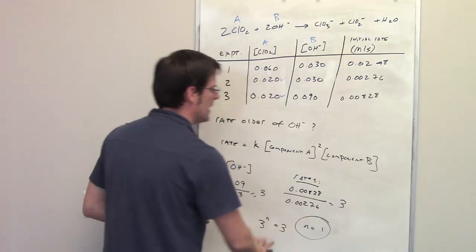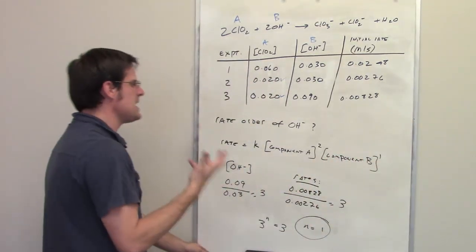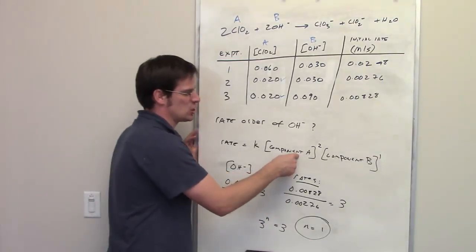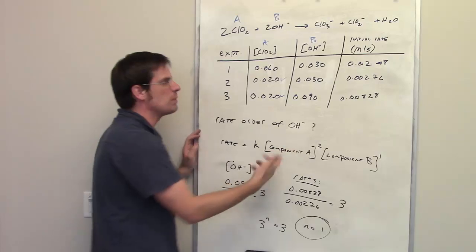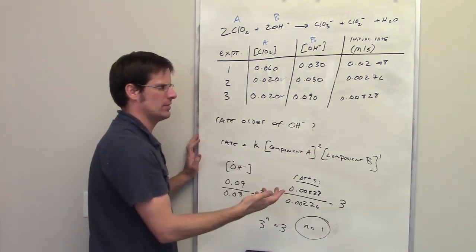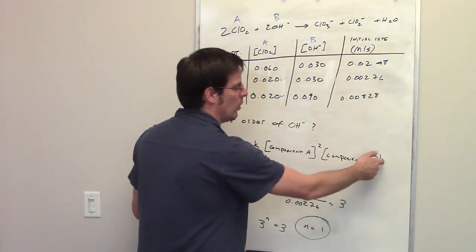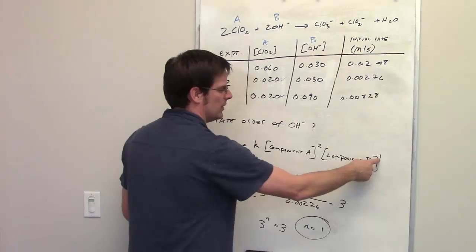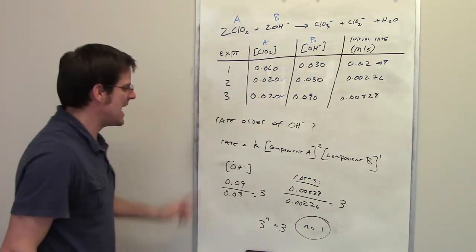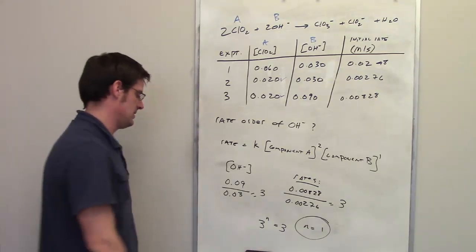So I can replace N with 1 here and then try and stand back and ask myself, what does that really mean? What it means is that if I were to double the concentration of A, I would quadruple the rate because it would be doubled squared. If I were, on the other hand, to double the concentration of B, it would only double the rate because it's doubled to the 1. That is the answer to those first two questions with respect to this problem.